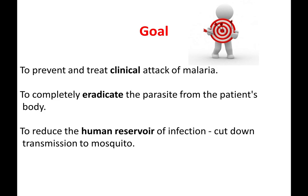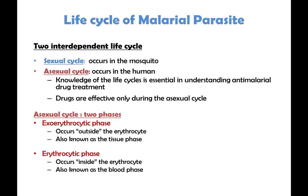The goal is to prevent and treat clinical attacks of malaria, to completely eradicate the parasite from the patient's body, and to reduce the human reservoir of infection to cut down transmission to the mosquito. The life cycle of malaria is divided into two parts: the sexual cycle of the plasmodia, which occurs in the mosquito, and the asexual cycle, which occurs in human beings. Knowledge of this life cycle is essential in understanding and designing antimalarial drug treatments.